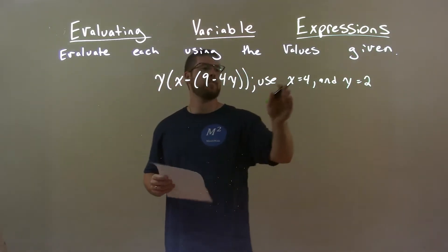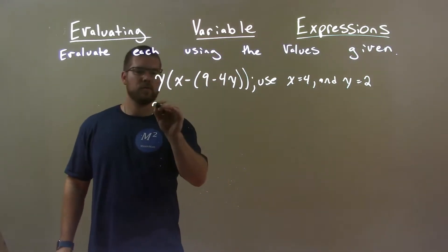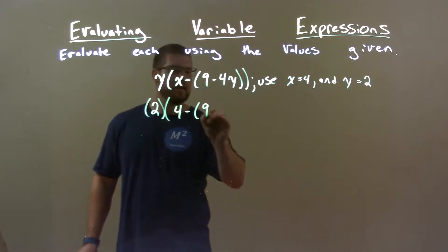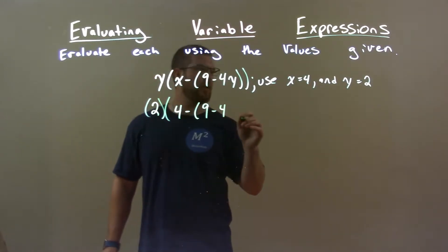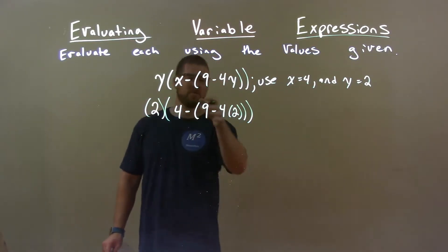First step, let's substitute our values, x for 4, y for 2. 2 for y out here, x is a 4 minus 9 minus 4 times that y, which is 2. Make sure we get all those parentheses in, right?